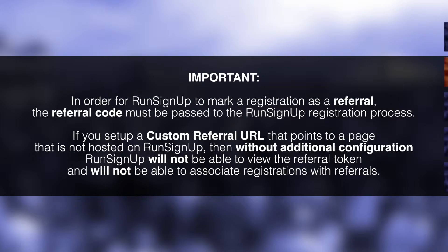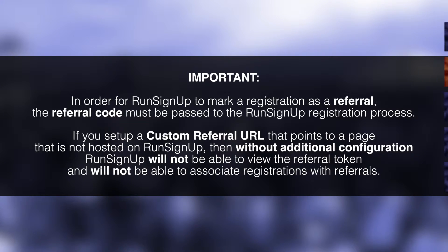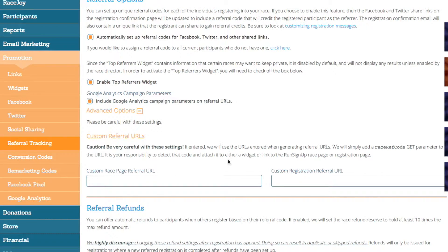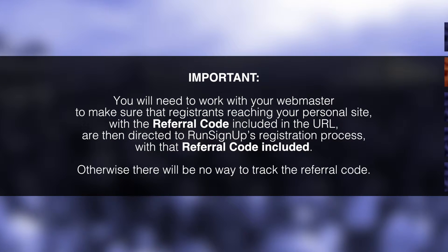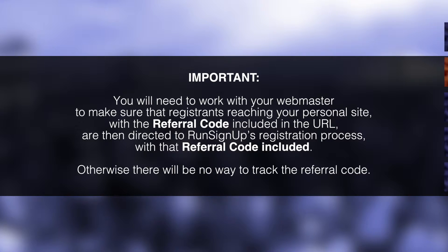In order for RunSignup to mark a registration as a referral, the referral code must be passed to the RunSignup registration process. If you set up a custom referral URL that points to a page not hosted on RunSignup without additional configuration, RunSignup will not be able to view the referral token and will not be able to associate registrations with referrals. If you use the Custom Race Page Referral URL field and/or the Custom Registration Referral URL field, the URL listed will be appended with a race_ref_code GET parameter, giving you the unique referral code of the referring user. You must then work with your webmaster to ensure registrants reaching your personal site with that referral code are directed to RunSignup's registration process with the referral code included; otherwise, there will be no way to track the referral.